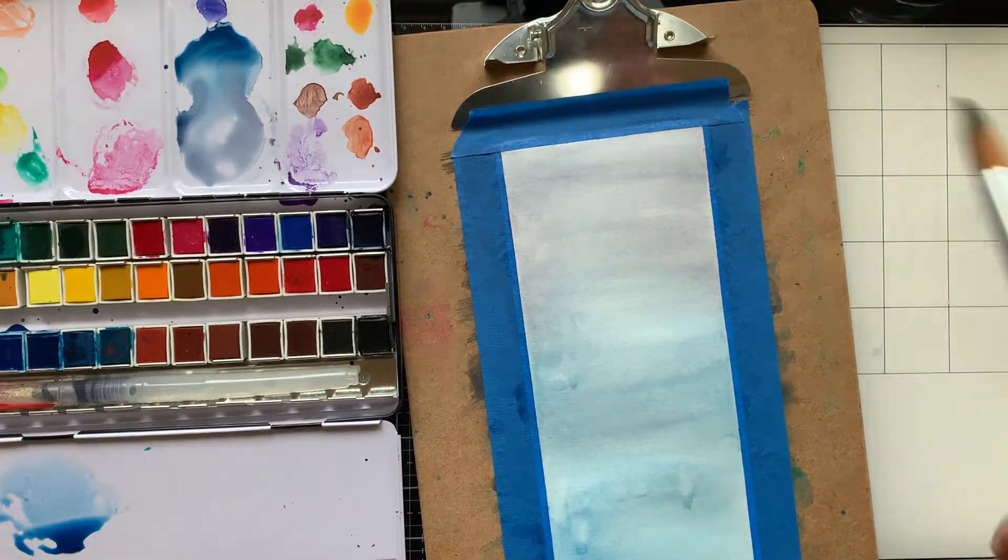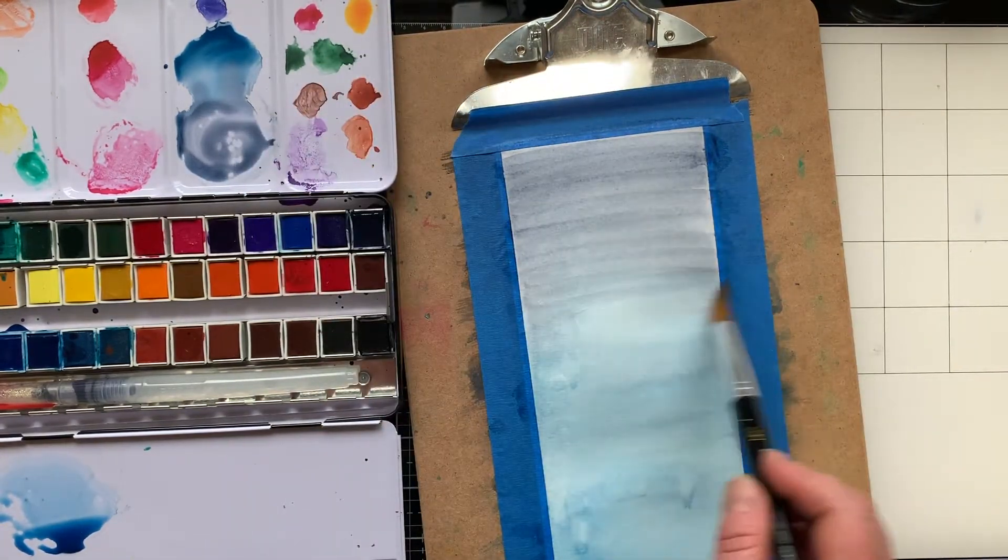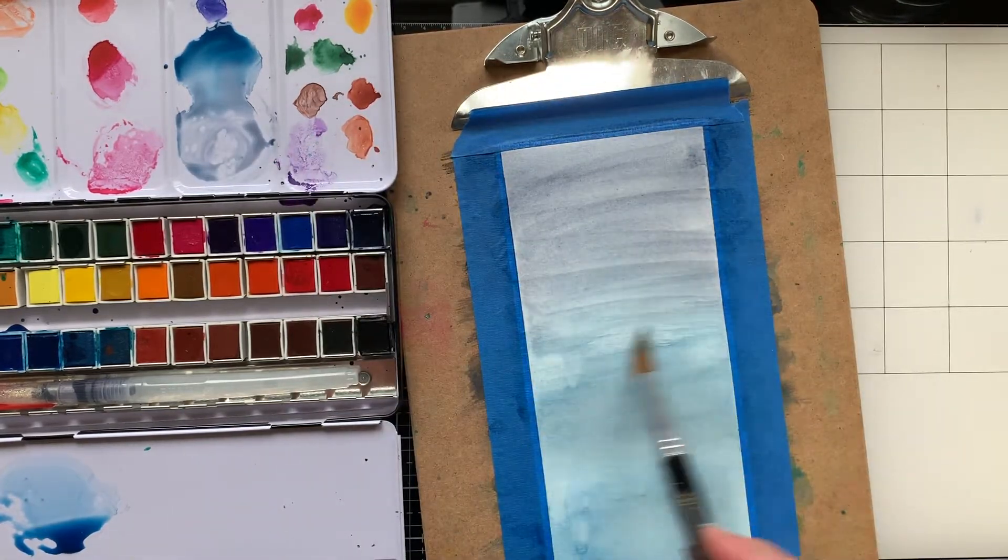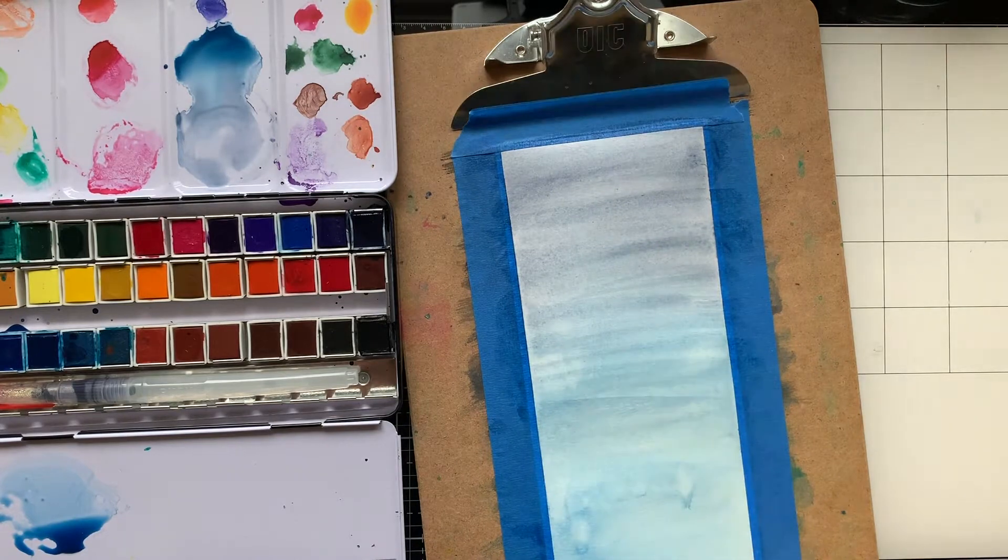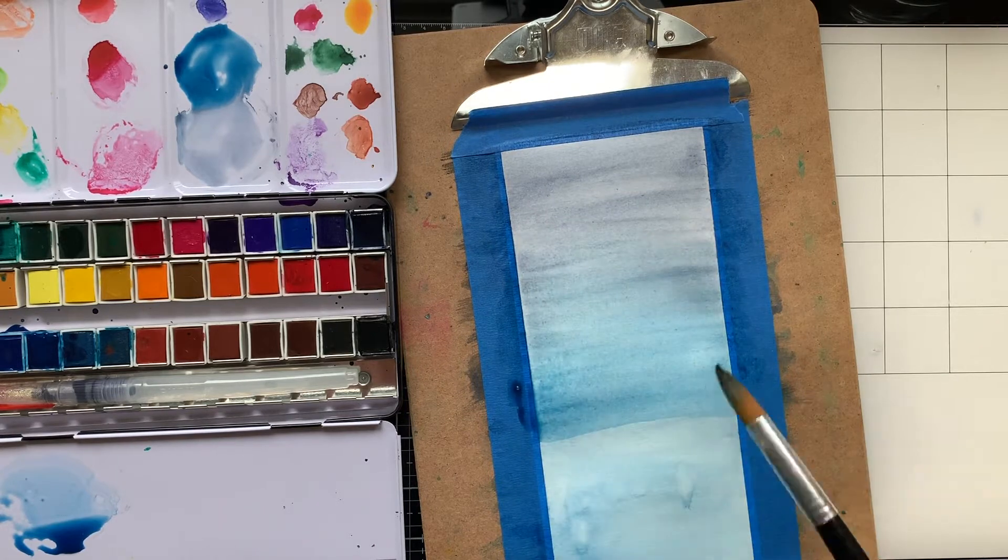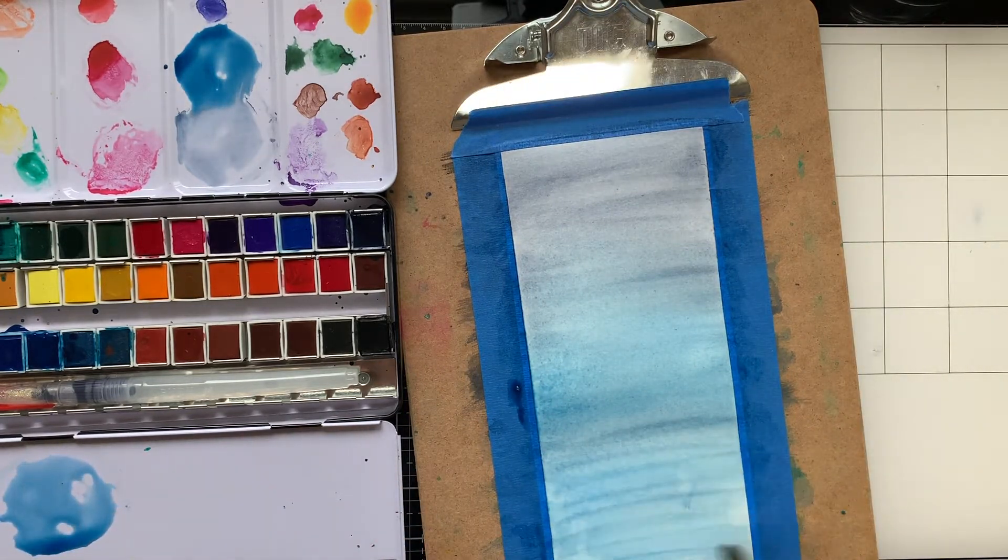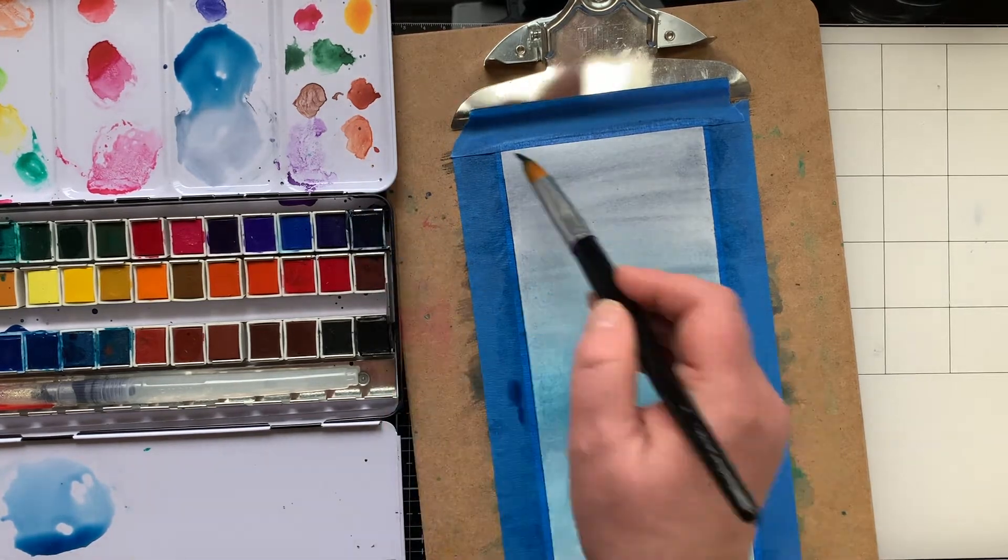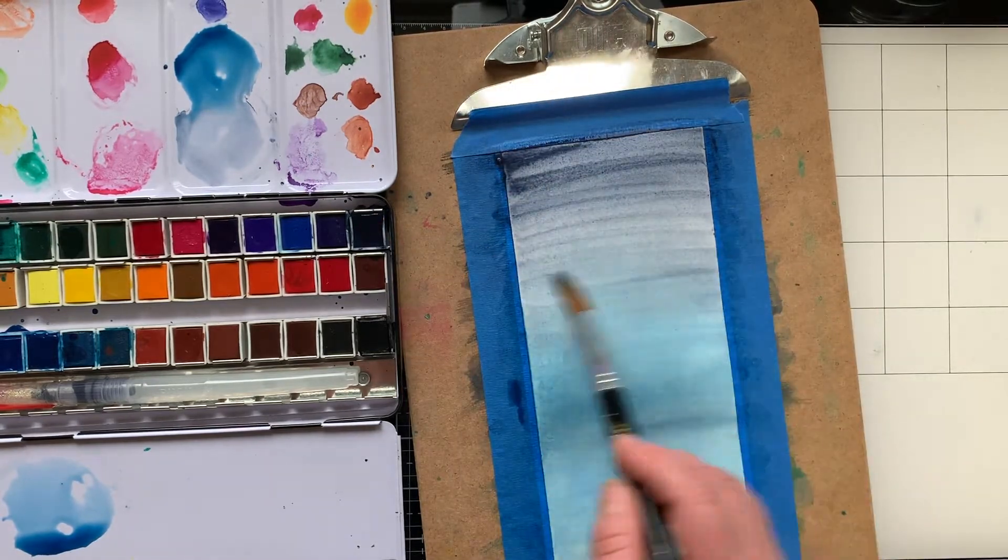Then I decided to go ahead and heat set that and add another layer. If you see some blotchiness in my background, that's because I touched it before it was dry, but it's going to be fine. I'm just wanting to darken this and intensify it and get a better blend, so I'm just going to keep adding different layers. It's really satisfying to sit and paint a simple background like this.